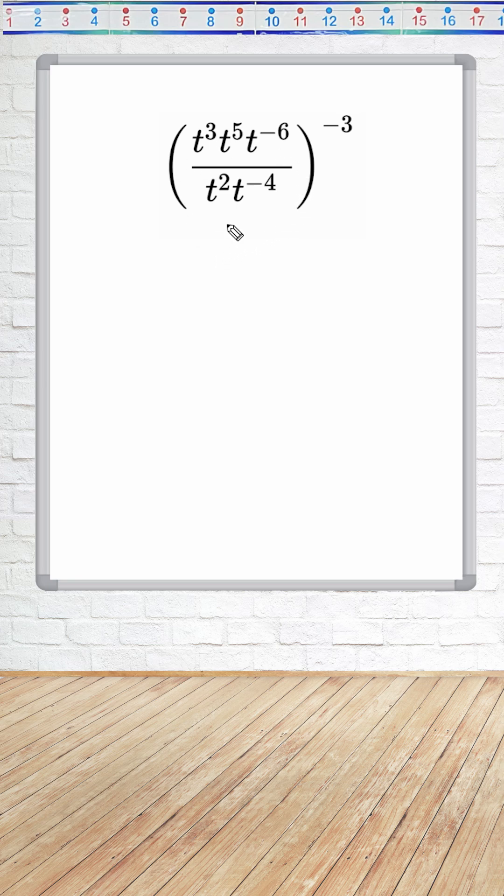Alright, we have an exponential expression that we have to simplify, and we're going to begin by simplifying what we can from within the parentheses and raising it to the negative third power.